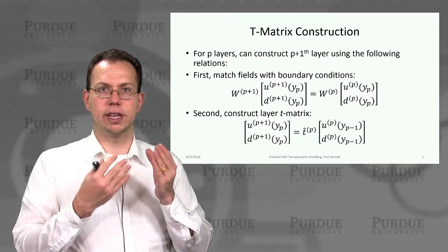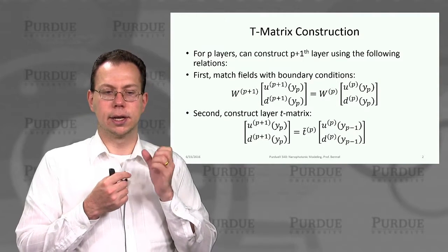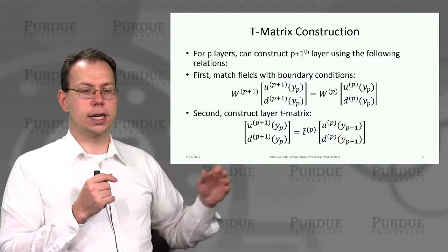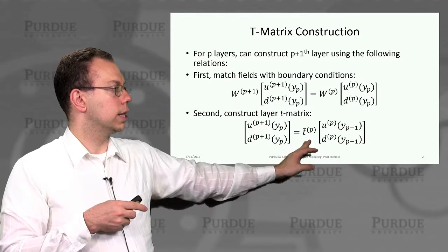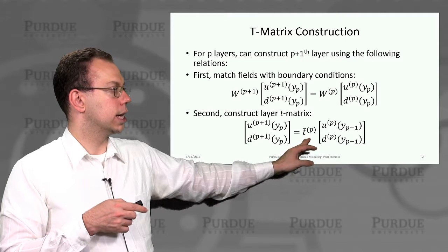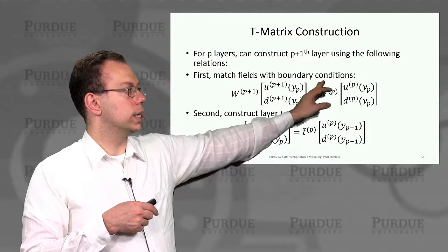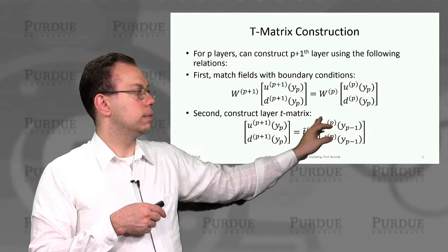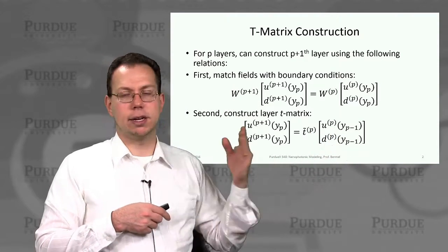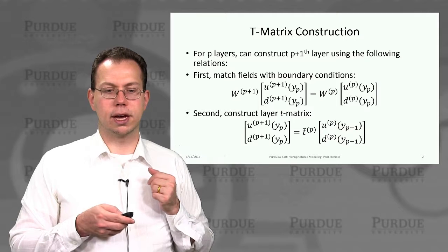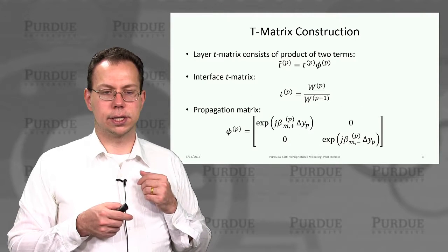So that's how you can actually physically construct those matches. And then we can actually then combine these Wp and Wp plus one into a single so-called layer T matrix, which often times would look like this, which would take this matrix, so Wp divided by Wp plus one, and then kind of propagate to the previous layer. And so that will make our lives a little easier in the long run, as you'll see.